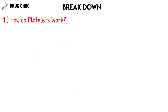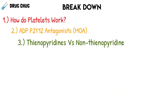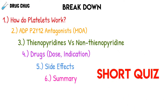A quick breakdown of everything in this video: first we'll talk about how platelets actually work, then we'll talk about the ADP P2Y12 antagonists like clopidogrel and the mechanism of action, then we'll get into the thienopyridines versus the non-thienopyridines antiplatelets, then we'll talk about the drugs in detail like the dose and indications, then the side effects, and then a quick summary.